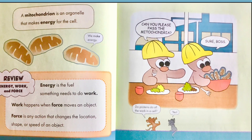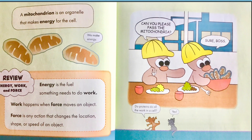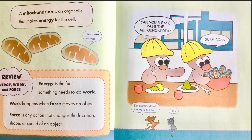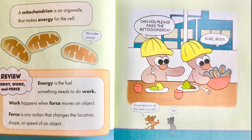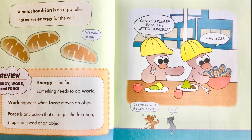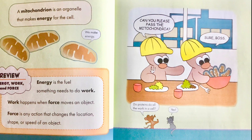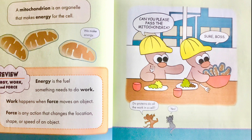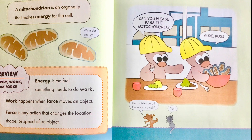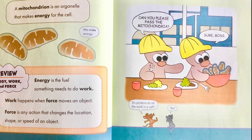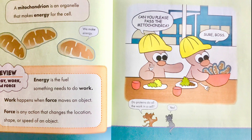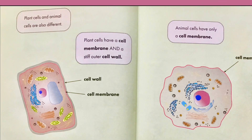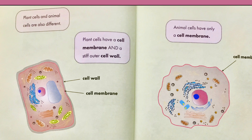A mitochondrion is an organelle that makes energy for the cell. Energy is the fuel something needs to do work. Work happens when force moves an object. Force is any action that changes the location, shape, or speed of an object. Proteins do all the work in a cell.